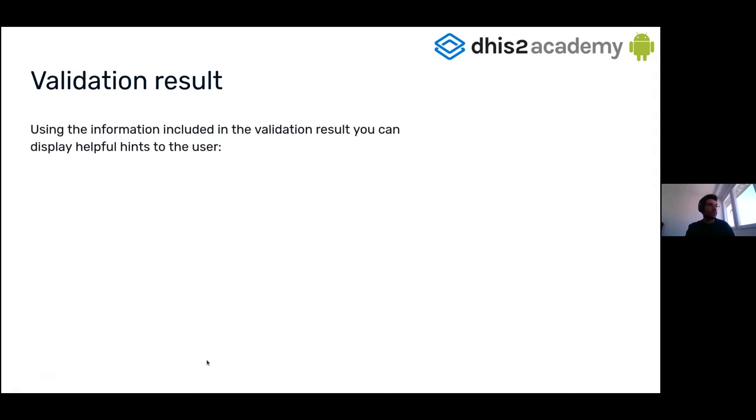So as an example about this, you can print to the user some descriptive feedback, for example, total population should be greater than under five population. Or you can print to the user the values, assuming that in this case total population is 500 and under five is 800, so this is not true.